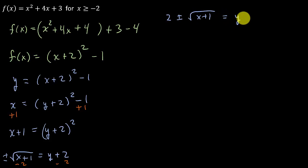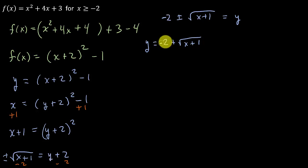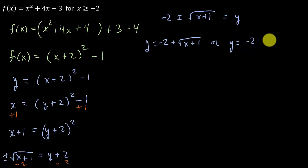So splitting this up, we get y equals negative 2 plus square root of x plus 1, or y equals negative 2 minus square root of x plus 1. It's minus 2 — I'd accidentally written plus 2 earlier, but it is minus 2.